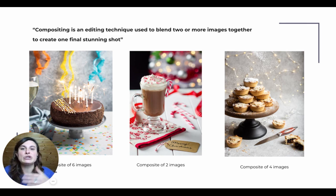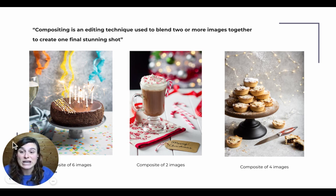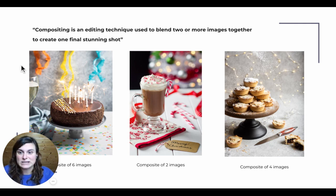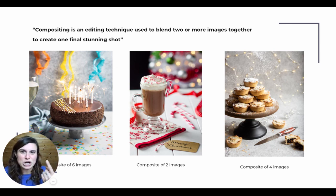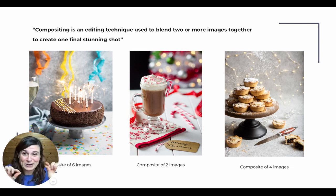As you're shooting, you need to know that you're going to create a composite. For example, the image of the cake is a composite of six images: one image for the main background, one image for the cake, and all the other images with different parts and different sparkles. Because I wanted the cake to be really sparkly and I couldn't just get all the sparkles I wanted in one shot, so I shot multiple images, each of which had a little sparkle that I really liked.